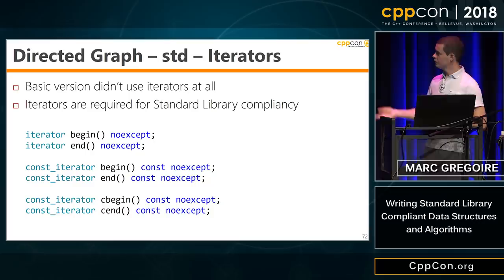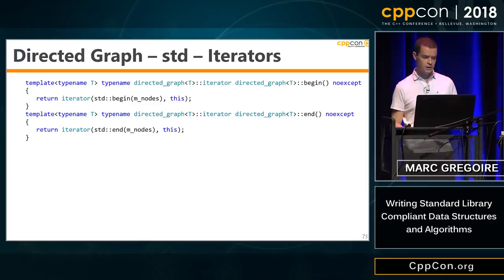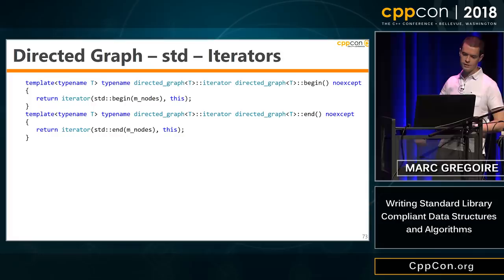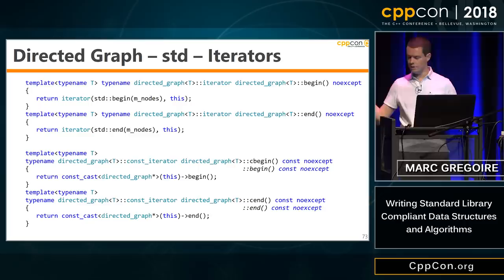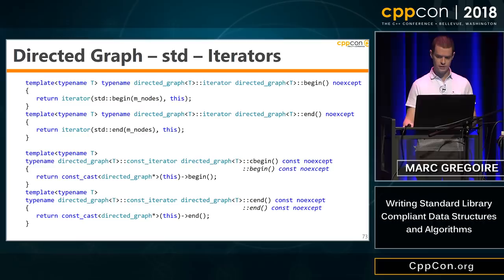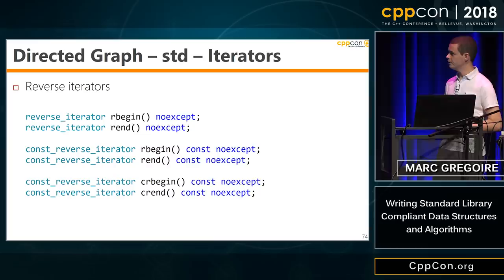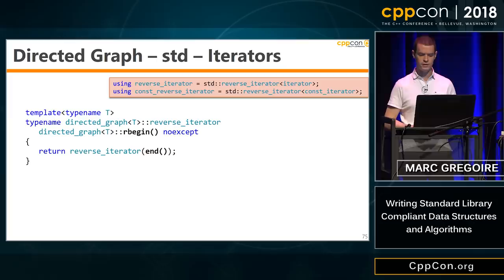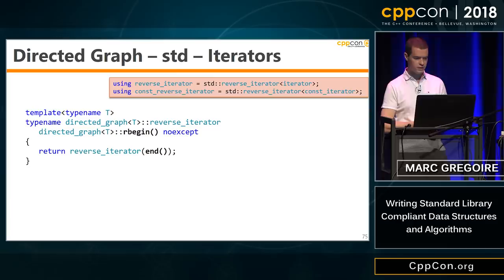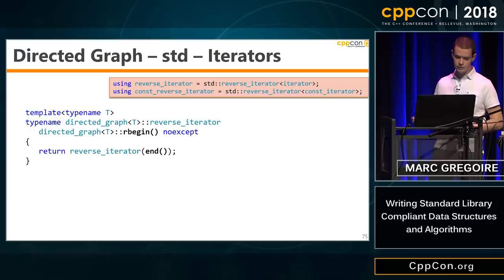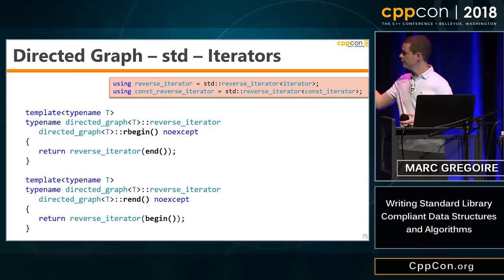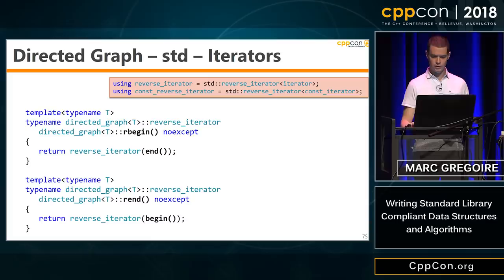Now we need iterator methods. We need begin, end, const versions of begin and end, and cbegin, cend. The begin method returns an iterator to the beginning of our container, end returns an end iterator, and the const versions are implemented using the const_cast pattern. Since we support bidirectional iteration, we also need rbegin, rend, crbegin, crend — our reverse_iterator is defined in terms of std::reverse_iterator, so rbegin returns a reverse_iterator constructed from end, and rend returns one constructed from begin. We need a similar set of methods for adjacency node iterators: begin, const begin, and cbegin — all accepting a node value and returning iterators to the adjacent nodes.